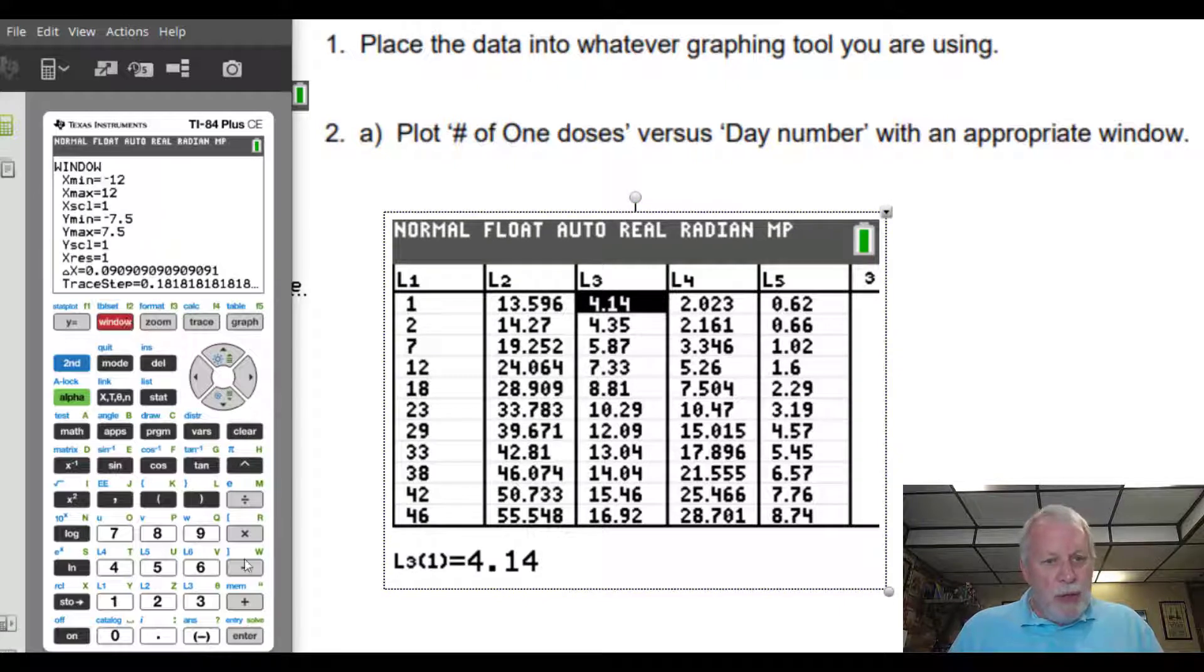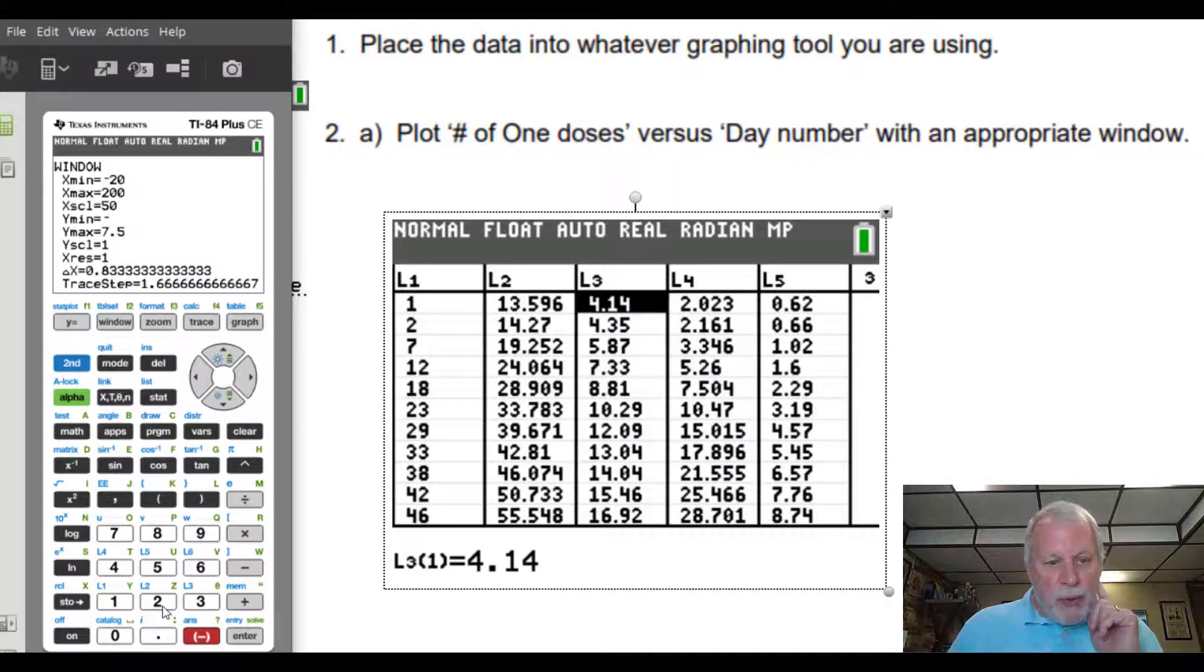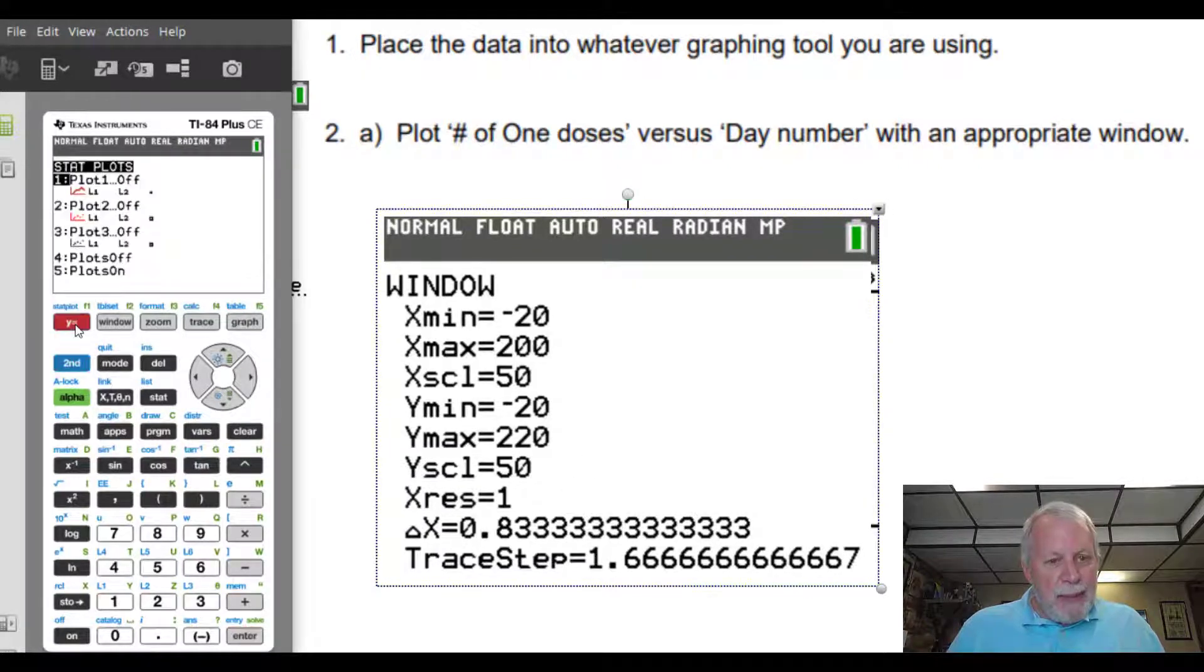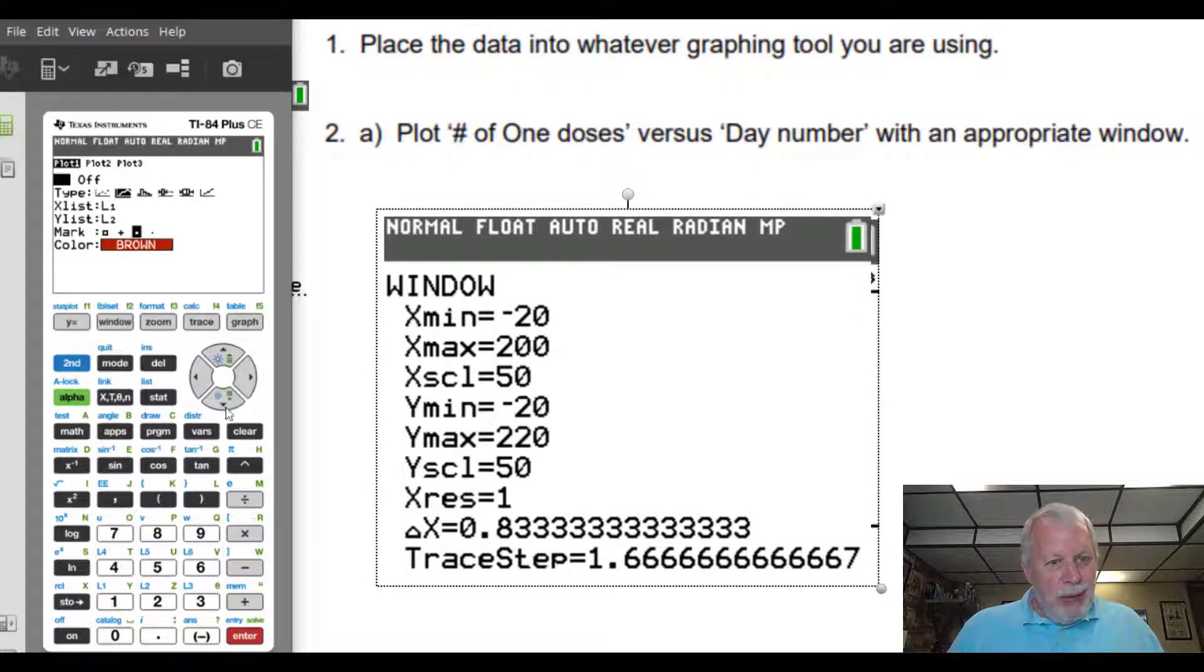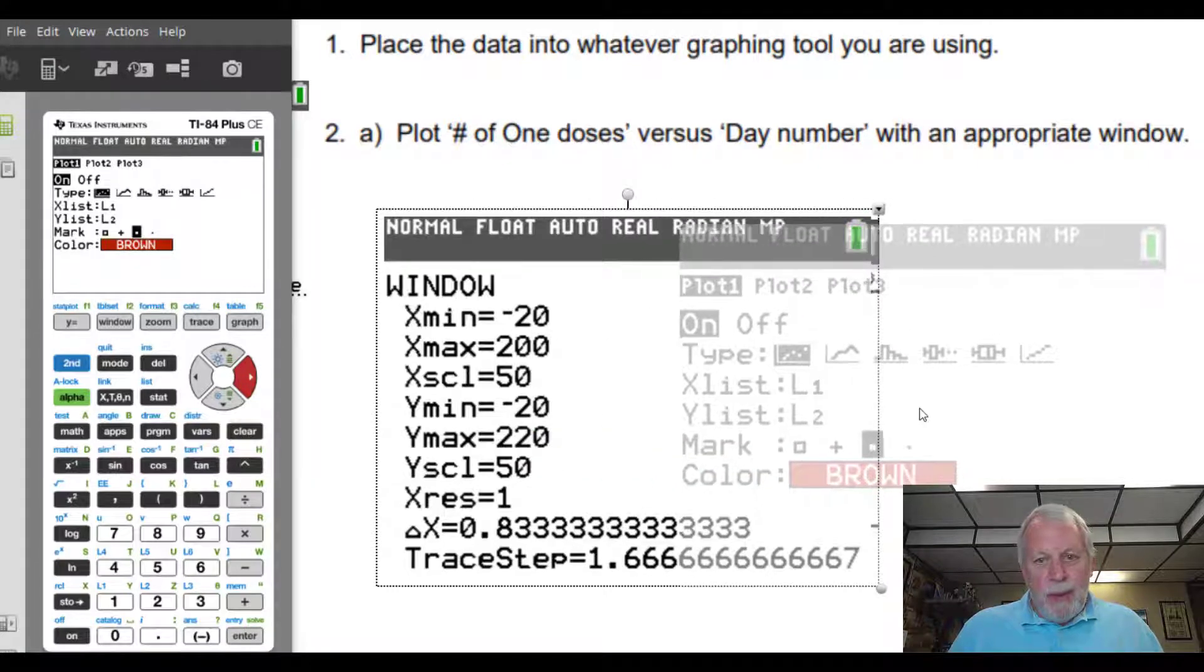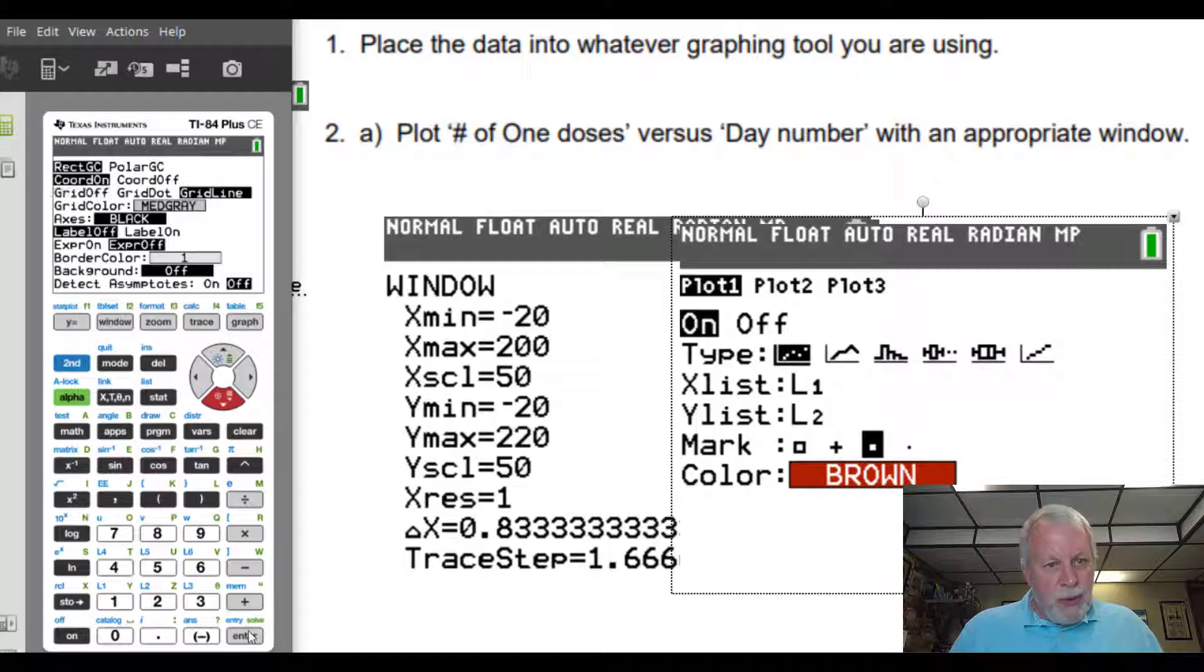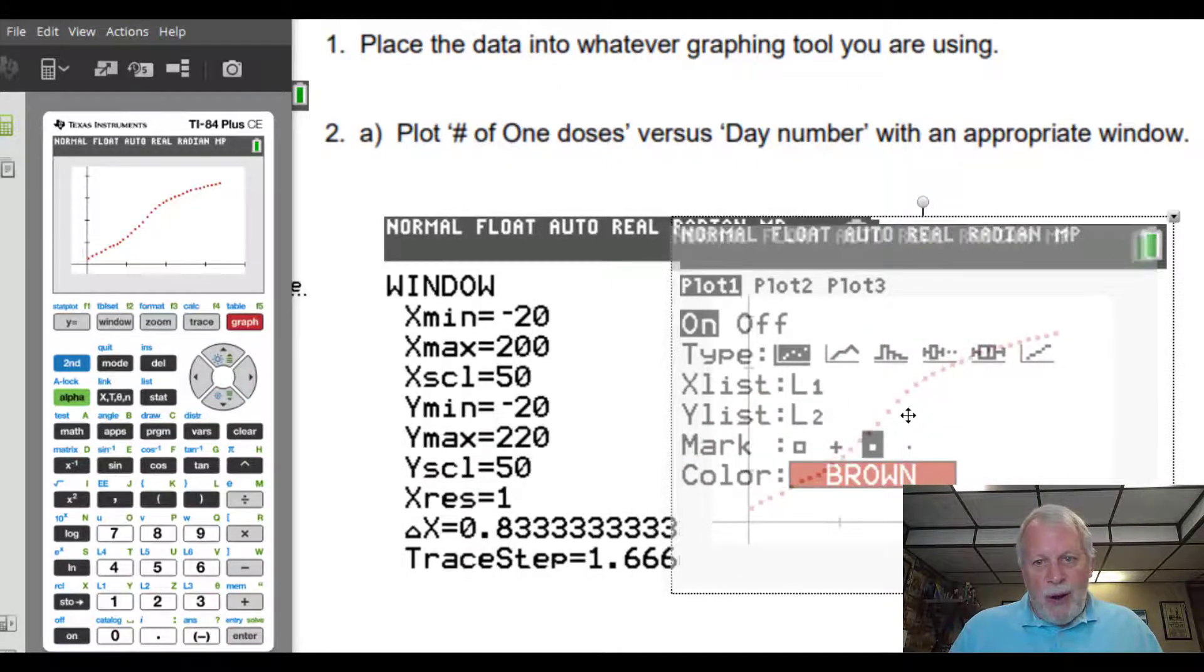So I'm going to go ahead and plot that. The window I'm going to use is probably not obvious until you look at the data. I'm going to go with negative 20 so that I have a buffer zone on the side of the y-axis. Go up to 200, which is more than the days that we have, and maybe have a tick mark every 50. Y's, I'm also going to go negative 20 so I have something below the x-axis. Go up to 220 million there. And show a tick mark at every 15 million. So there's my window. I'll go ahead and set up a stat plot. Turn on this. I do want it to be a scatter plot. List one and list two. I'm fine with brown. I'll go ahead and graph it. There's my data. It looks like I have a grid on, so I'm going to turn the grid off. I usually like to do that when I'm doing data. So there is our data.